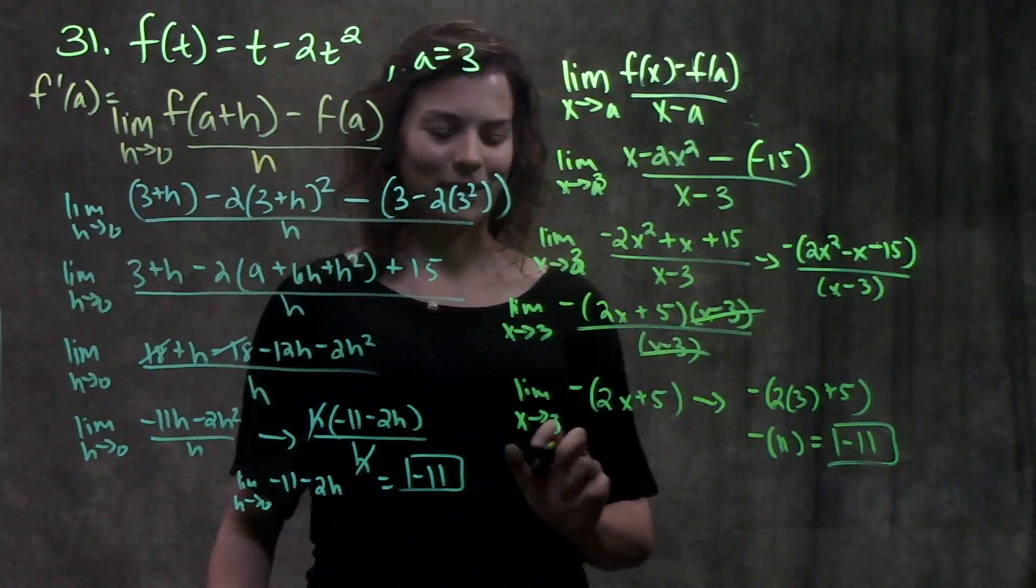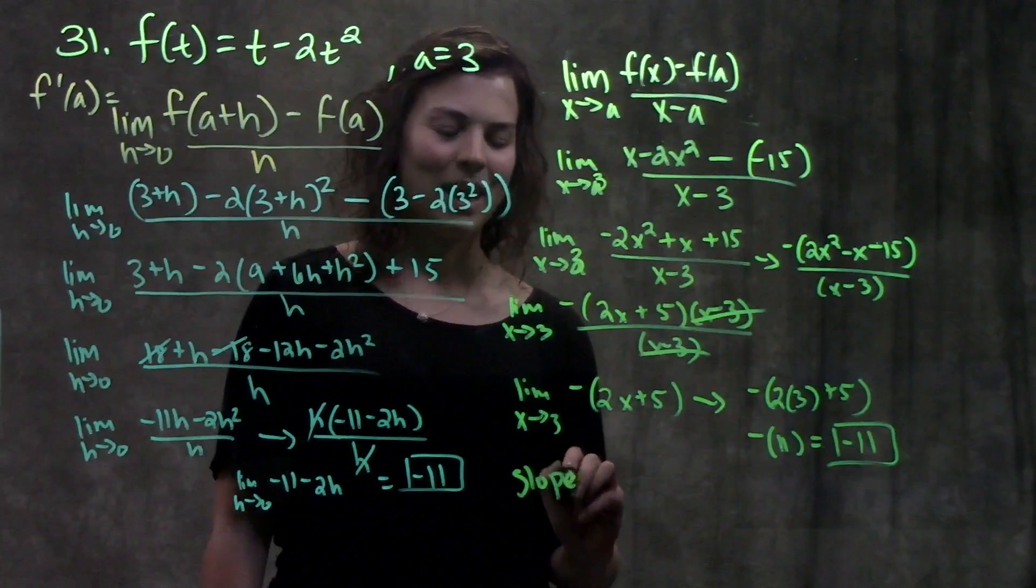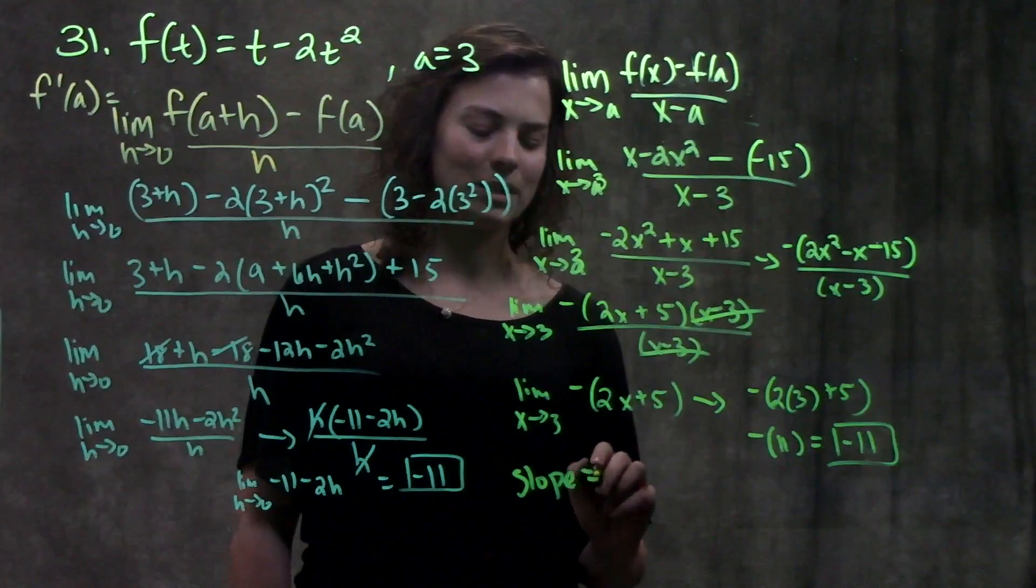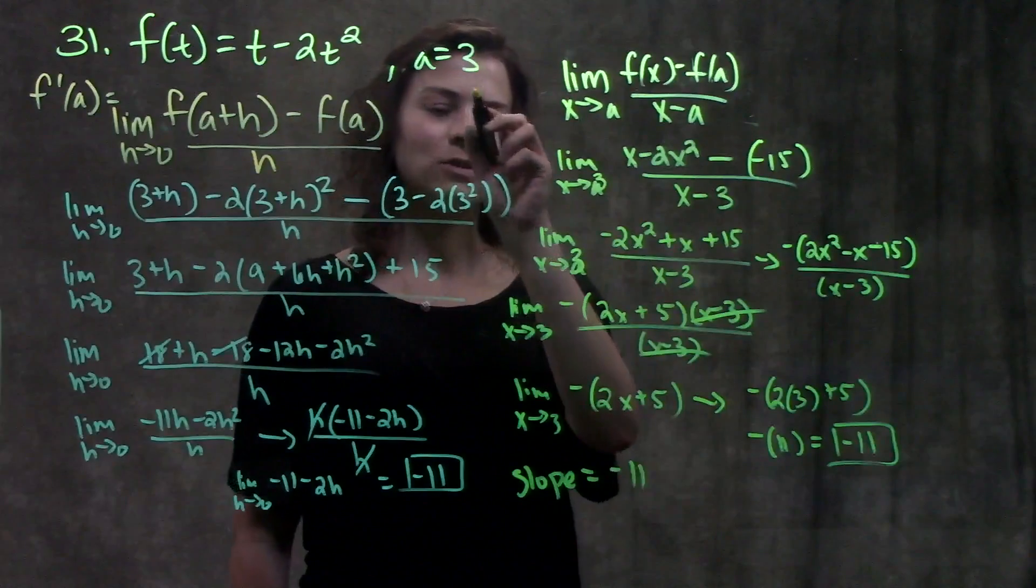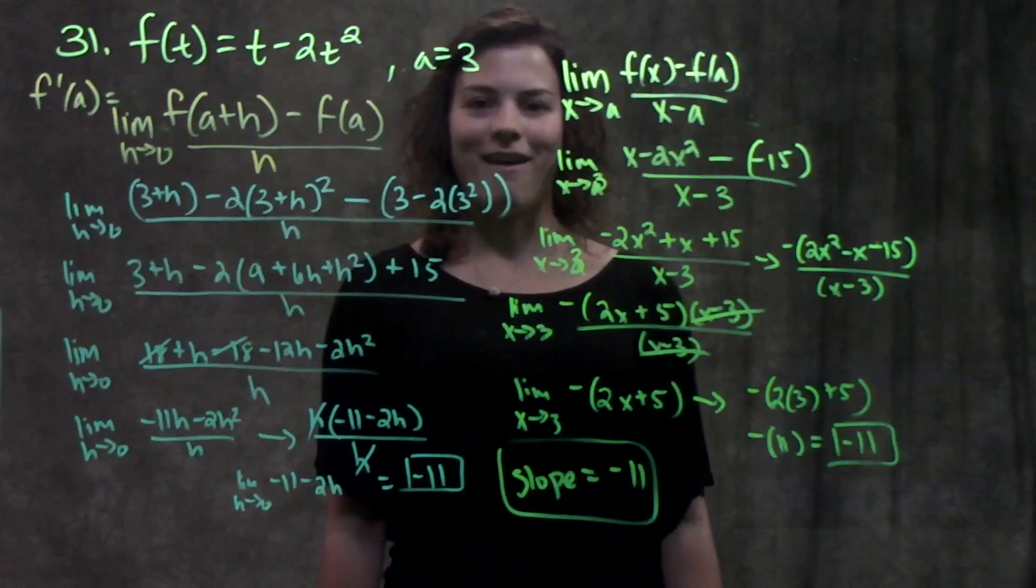Good work, guys. So that means that our slope, as verified by both of these limit definitions, at the point a equals 3 is negative 11.